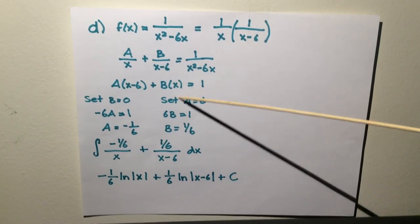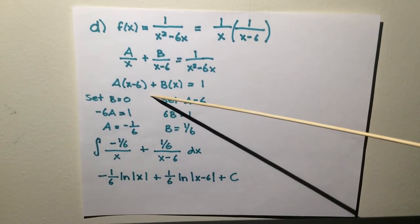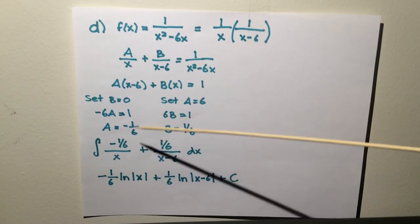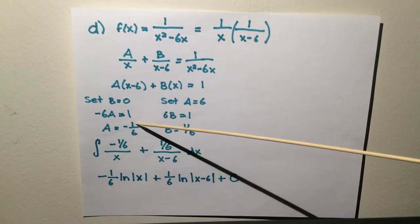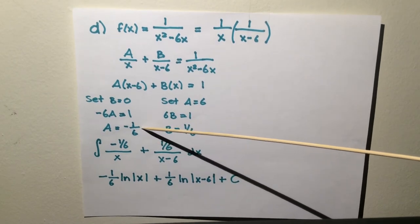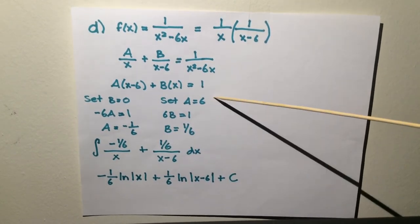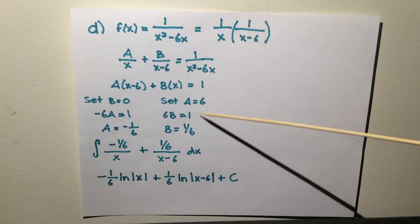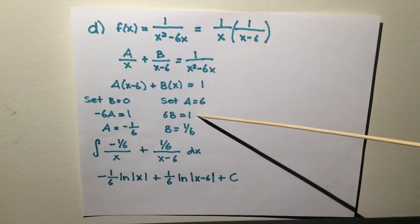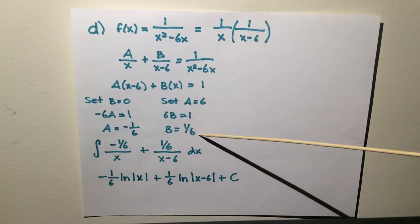Then you set x equal to 0 so you can solve for a. You're left with negative 6a equals 1. Once you solve for a, it's negative 1 over 6. Then you do the same for b. You set x equal to 6, so you're left with 6b equals 1. You solve for b and get 1 over 6.